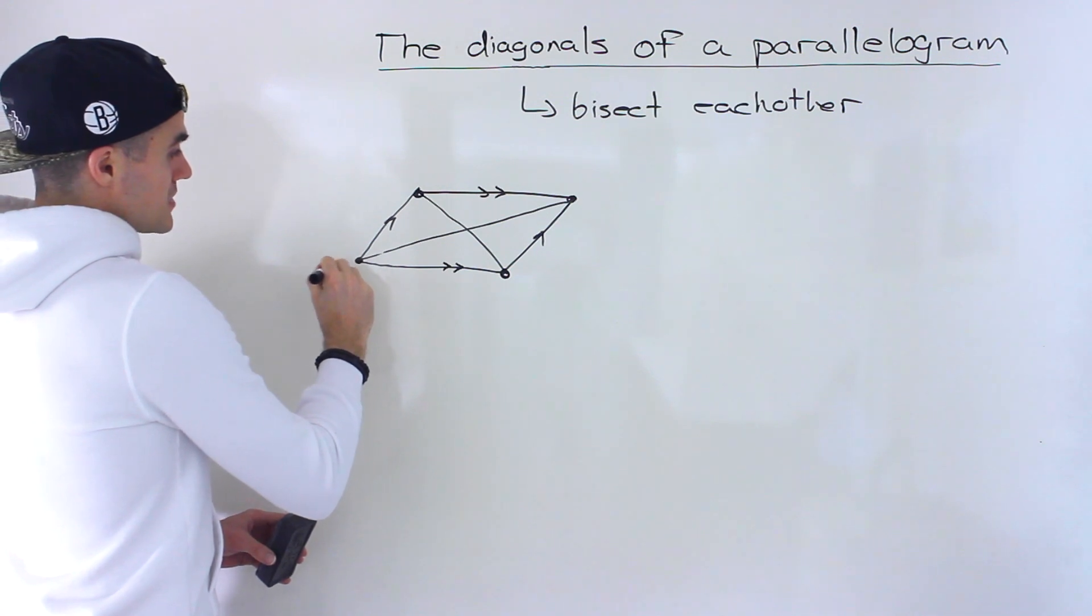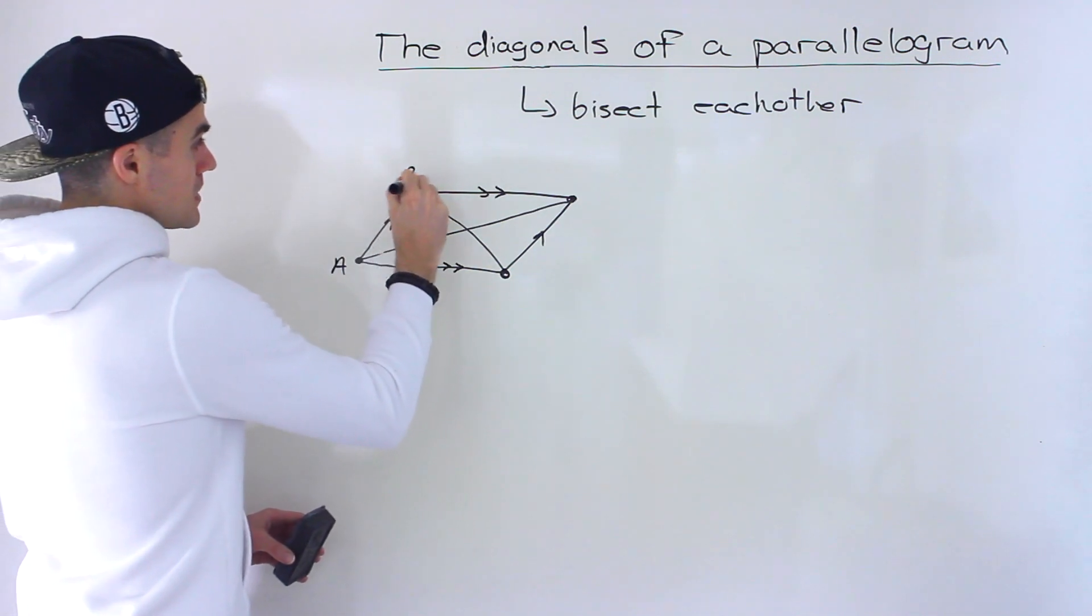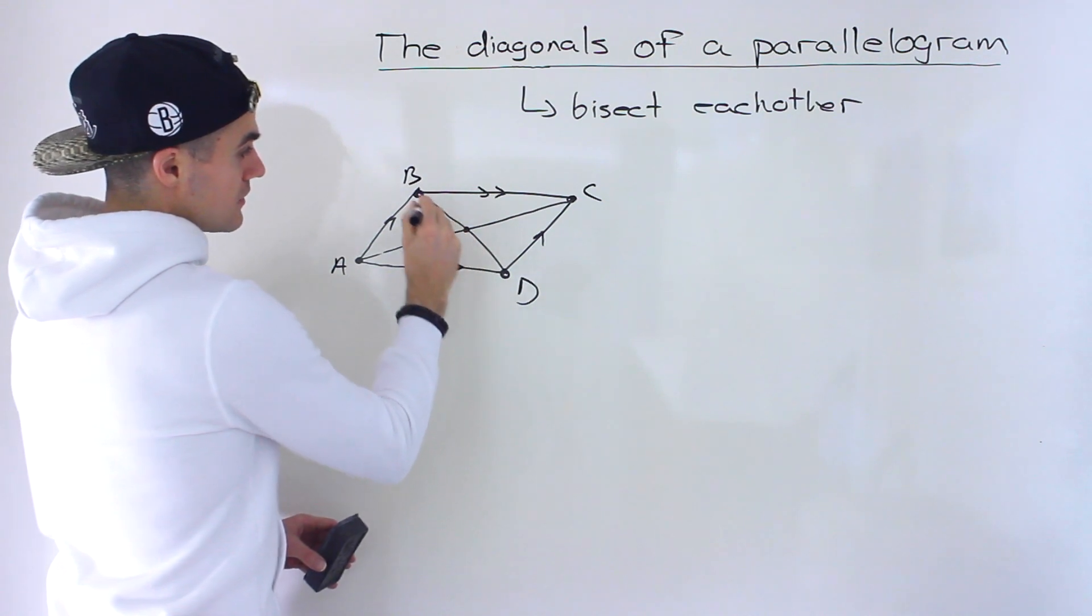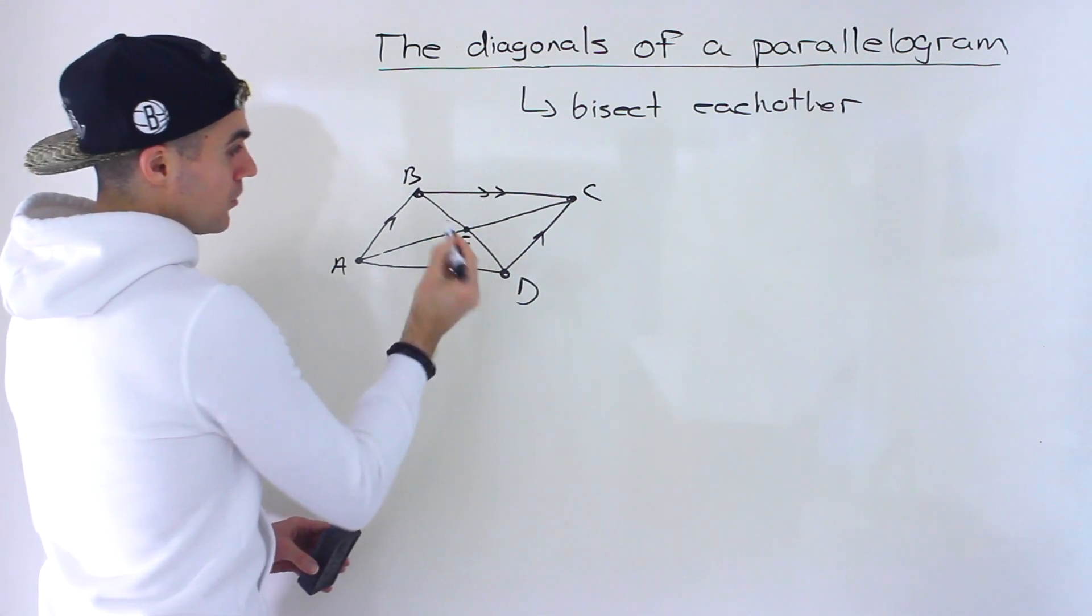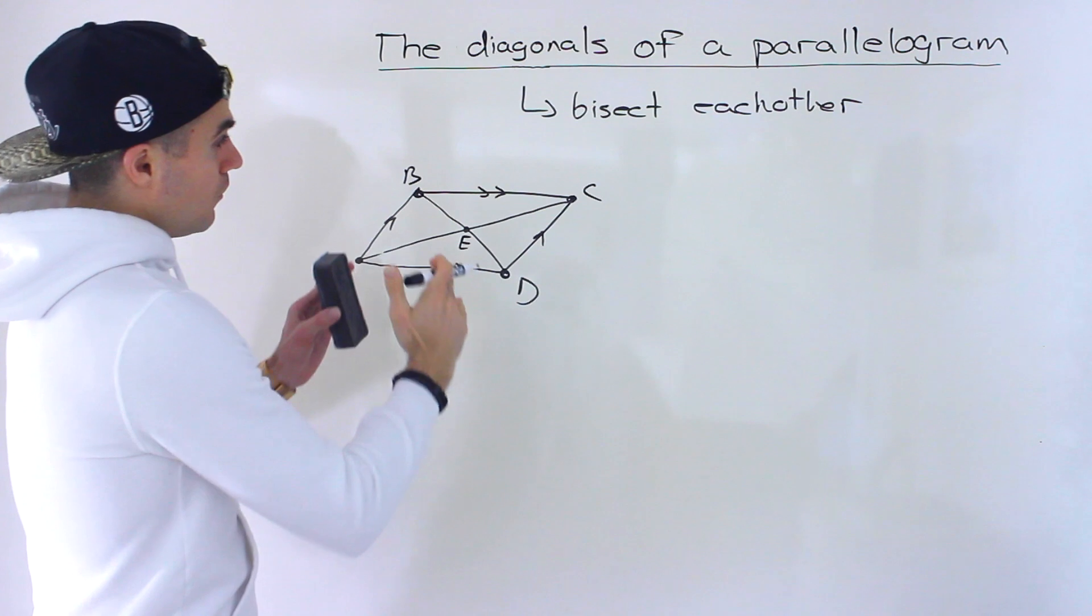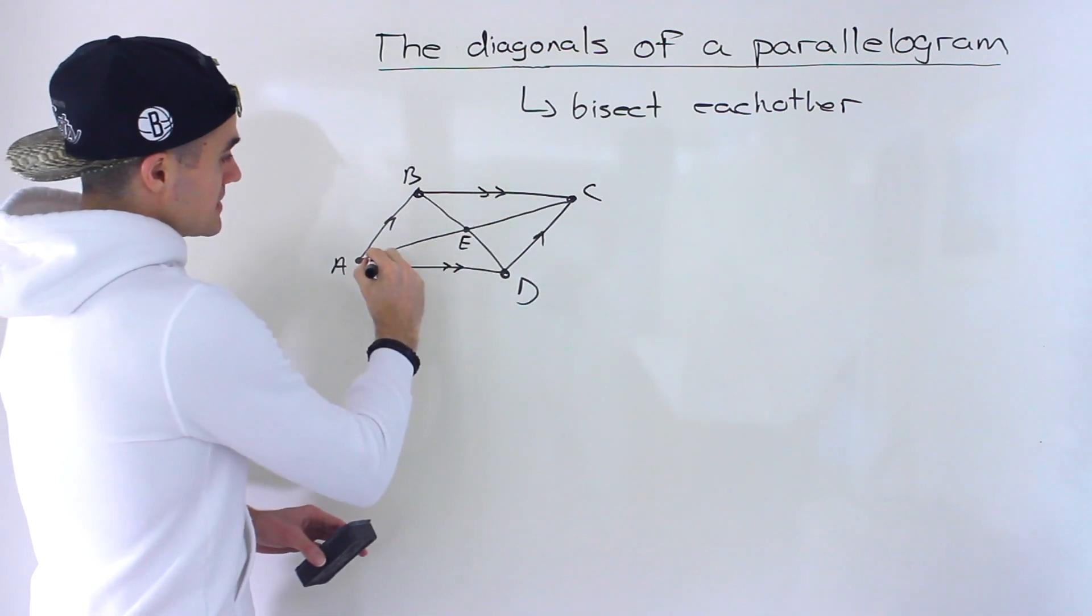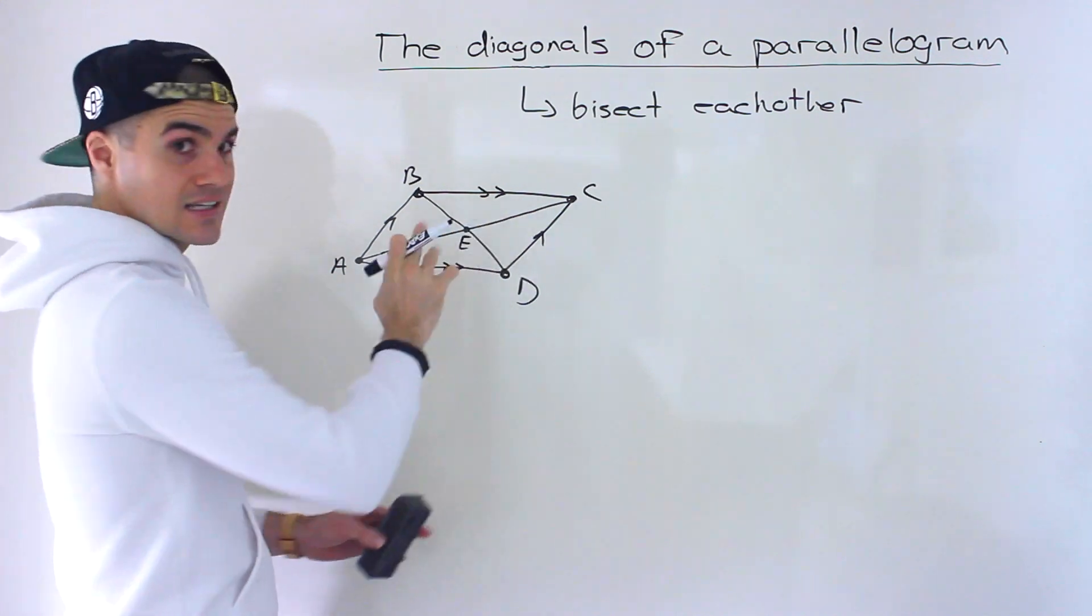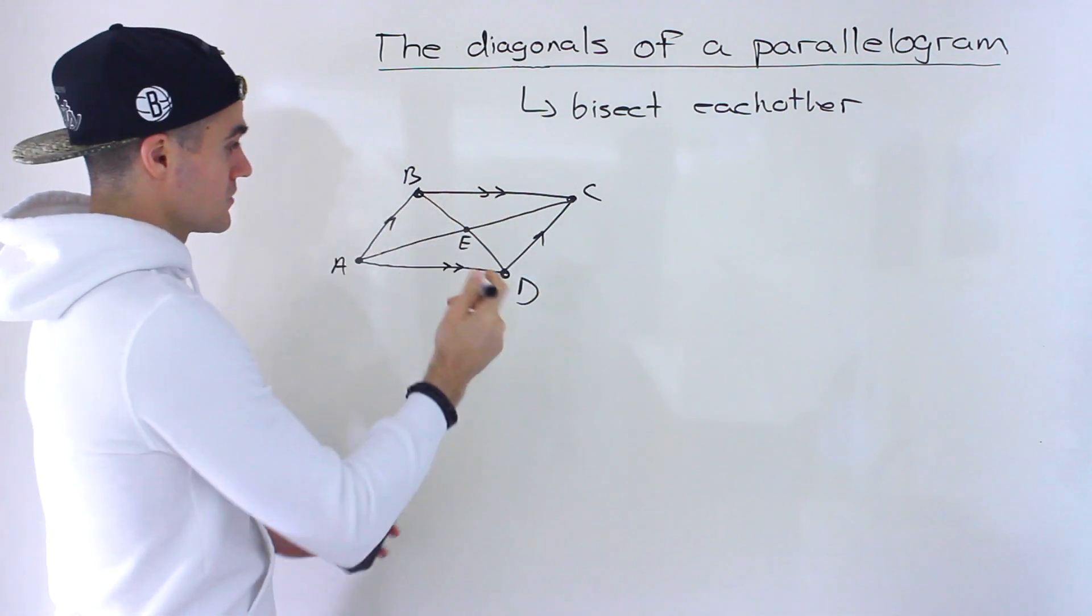And so if we label this parallelogram, let's label it A, B, C, D, and then where the diagonals meet, let's label that point E. What it means when they bisect each other is basically that this point E cuts both respective diagonals in half.